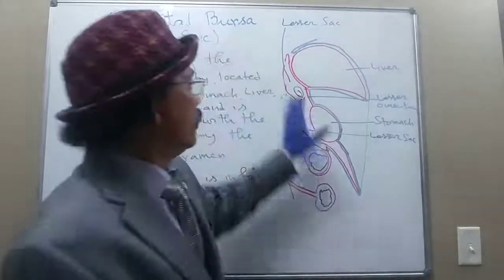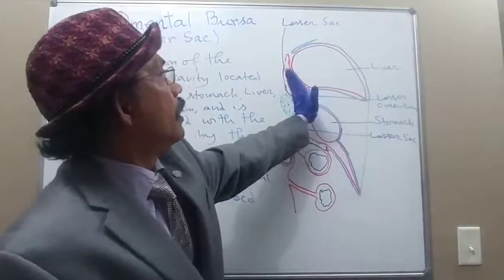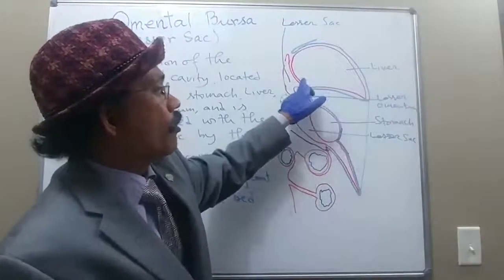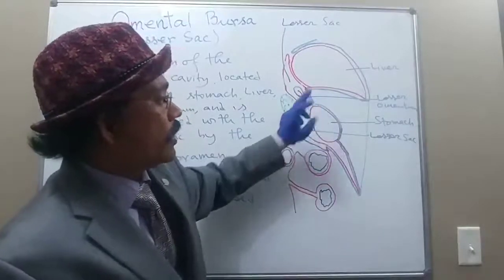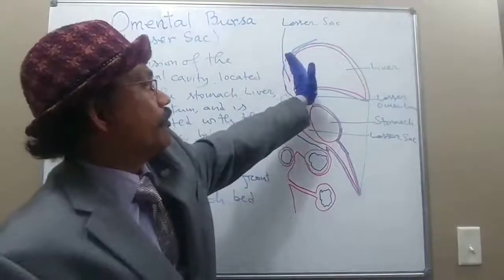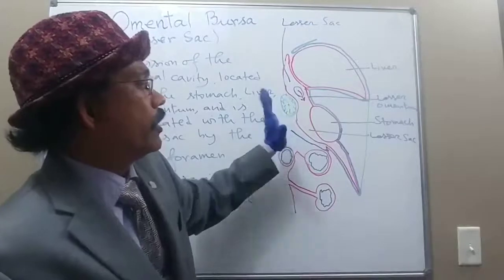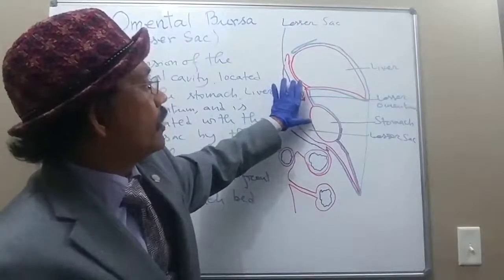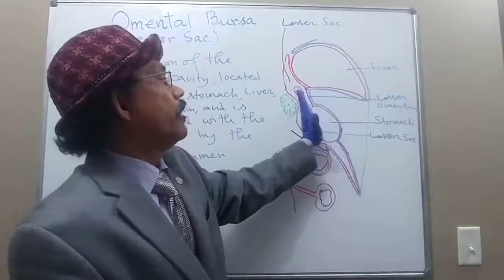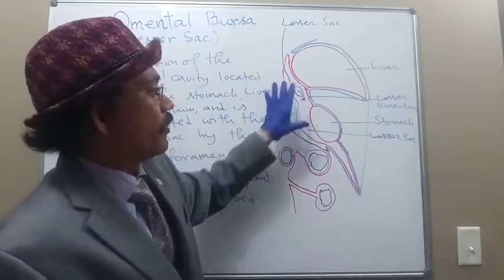These structures form the stomach bed. So between the stomach bed and the stomach we have the lesser sac. The lesser sac is also bounded anteriorly by the caudate lobe of the liver and the lesser omentum. So the stomach, lesser omentum, and liver form the anterior boundary, and the stomach bed structures form the posterior boundary. This is a potential space over which the stomach can move very easily.